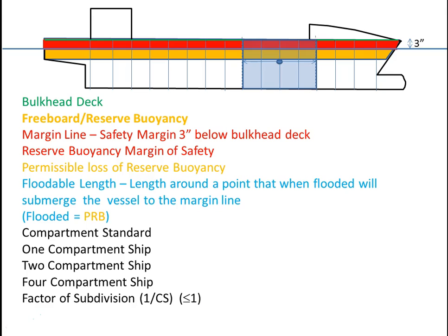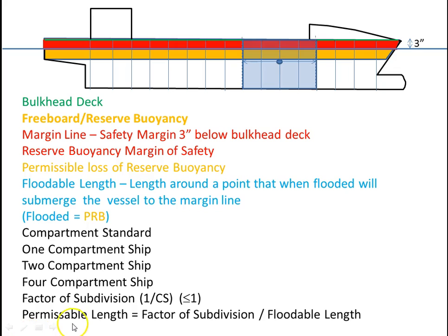That takes us to the term called the permissible length — the length that is permissible between main transverse watertight bulkheads. Here's the formula: the permissible length equals the factor of subdivision multiplied by the floodable length. The factor of subdivision is one divided by the compartment standard, and the floodable length is defined by your naval architect.